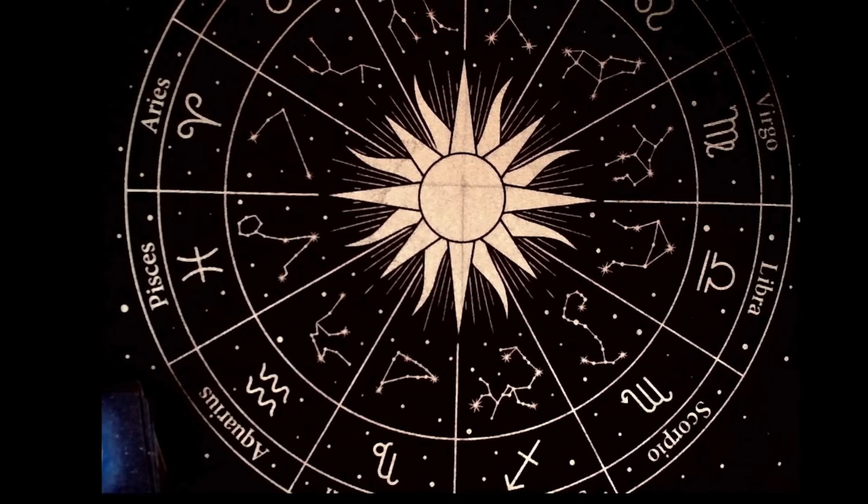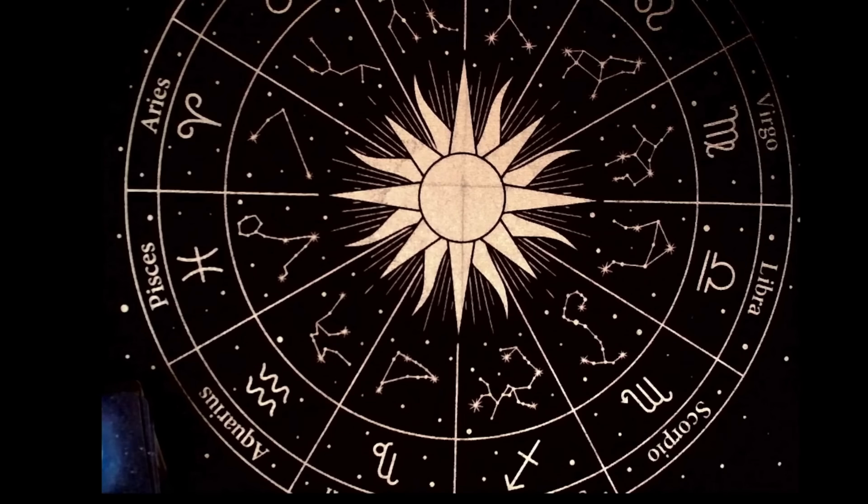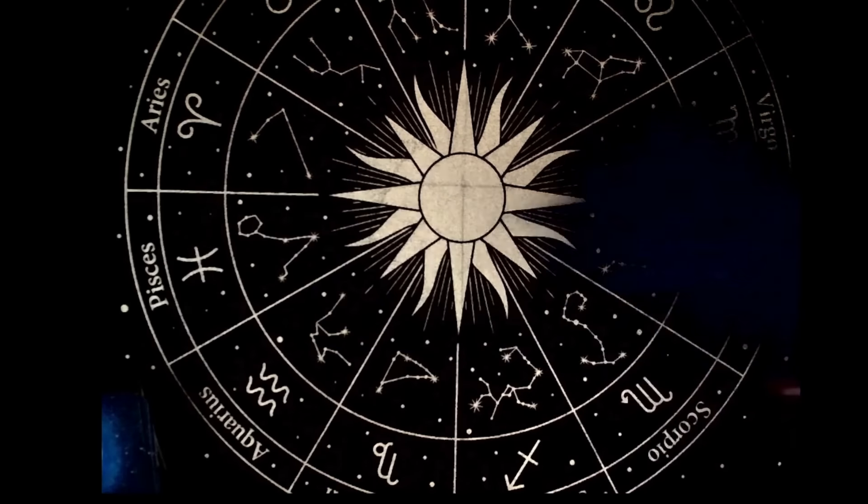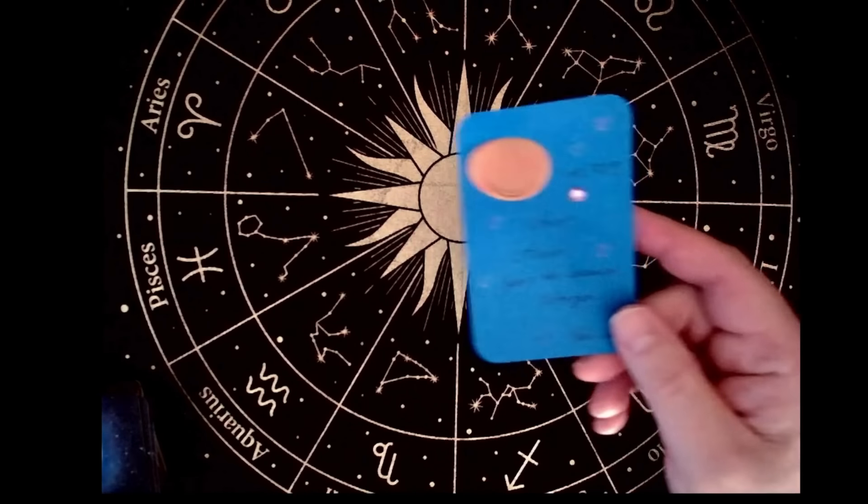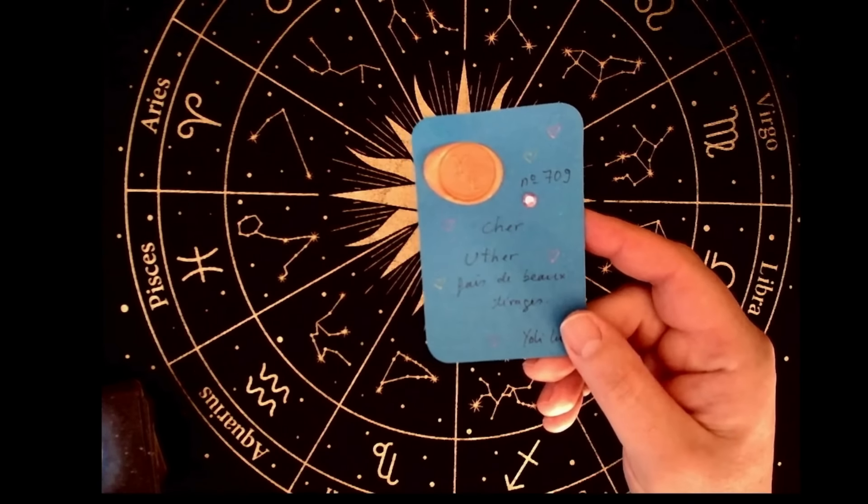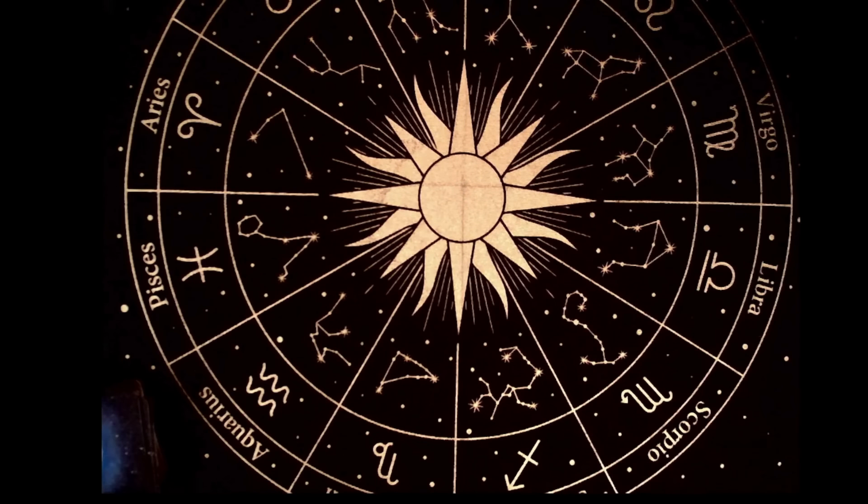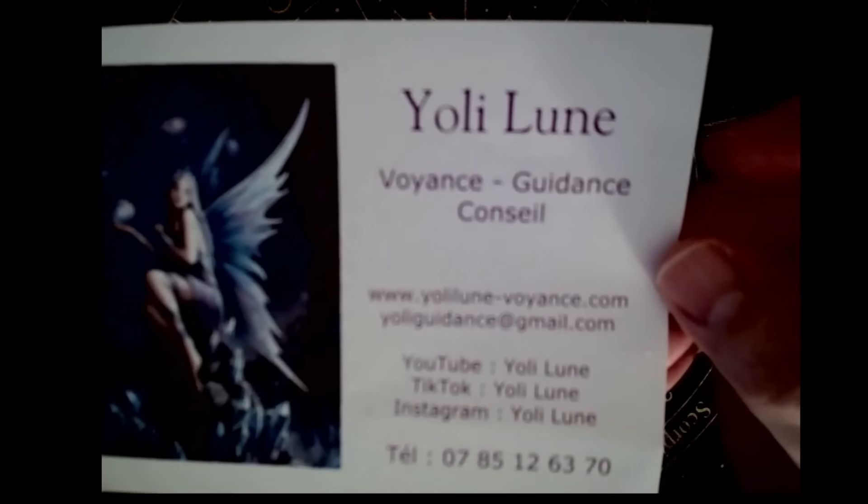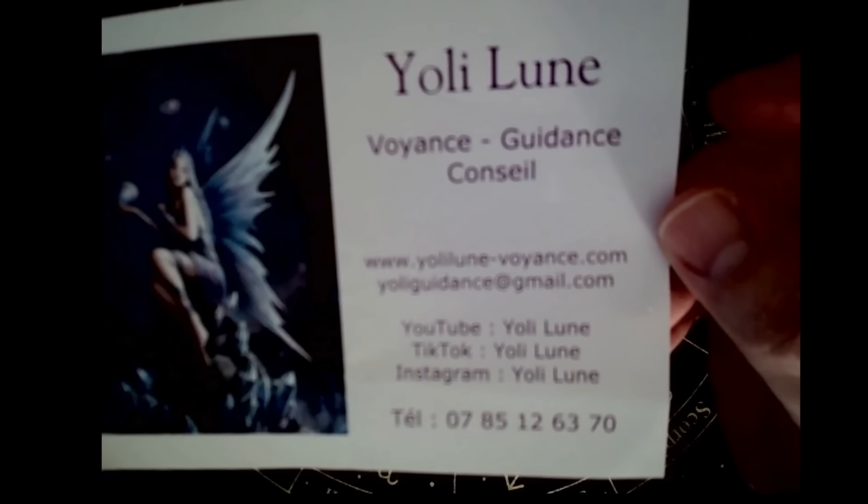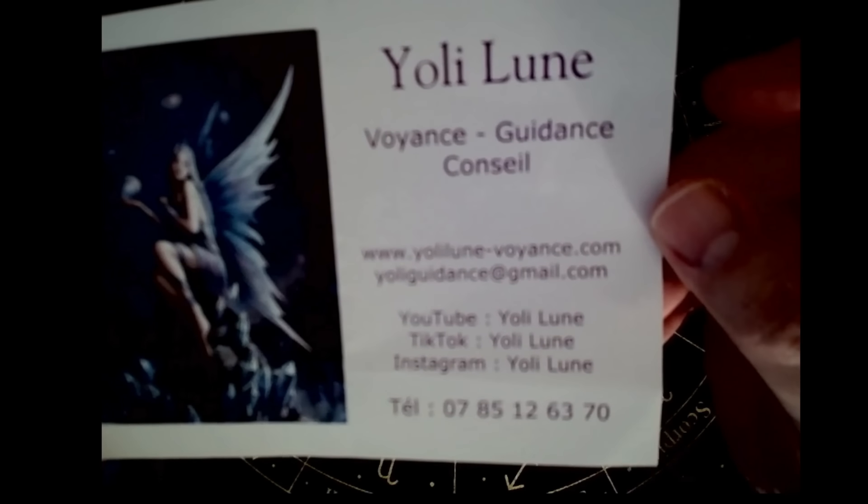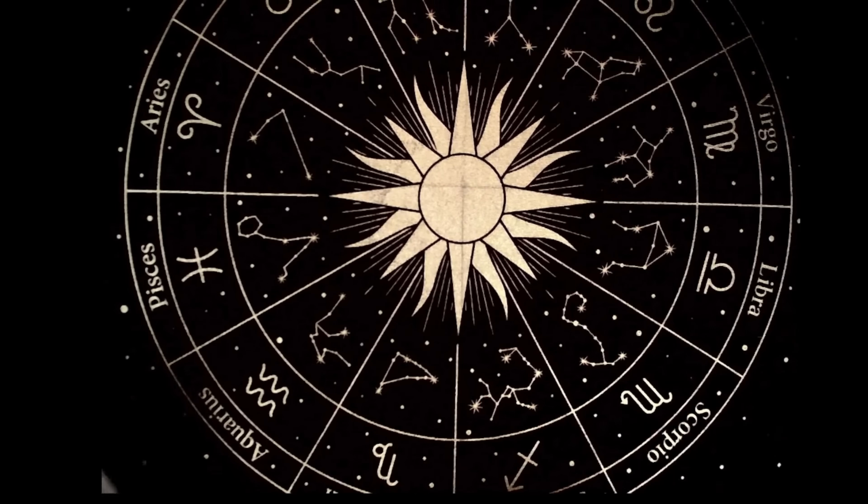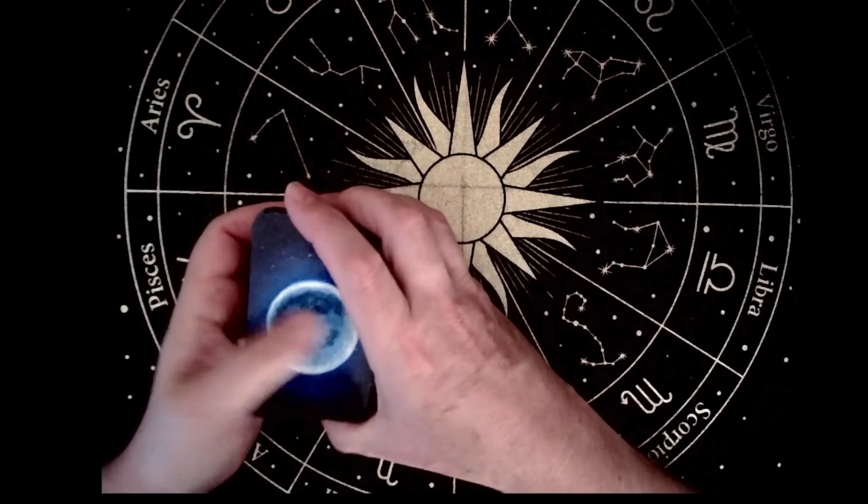Mais avant tout, je vais vous parler d'un oracle, celui de Yoli Lune. Yoli Lune m'a fait parvenir cet oracle dans une pochette pour la protection des cartes. Si vous commandez ces cartes, vous aurez un sceau avec un numéro. En effet, ce n'est pas un oracle qui est édité à 3000, 5000, 10000 exemplaires ou plus. Il reste un oracle presque artisanal que vous pouvez trouver sur le site de Yoli Lune.